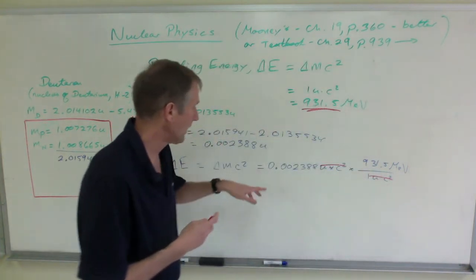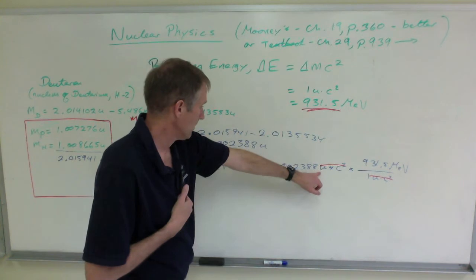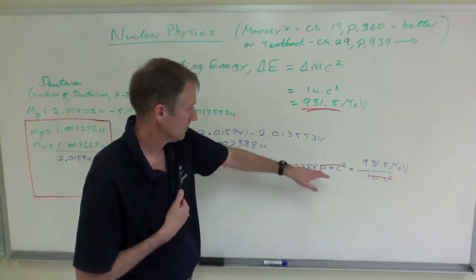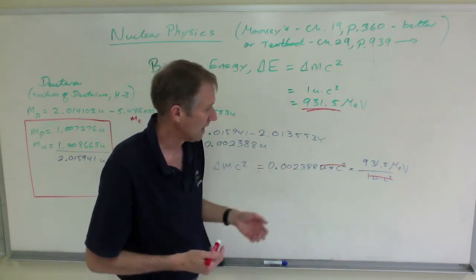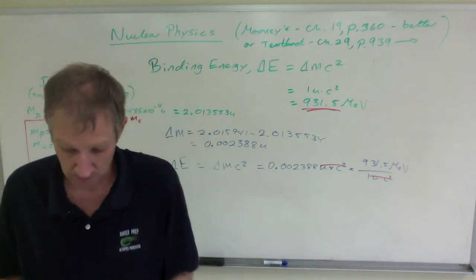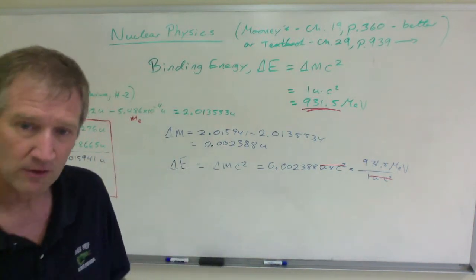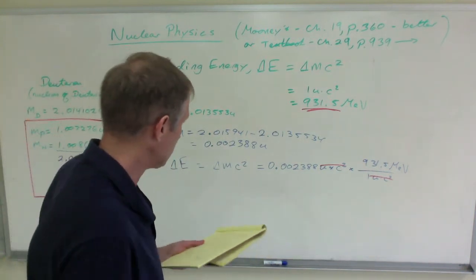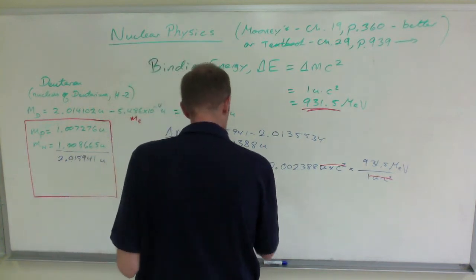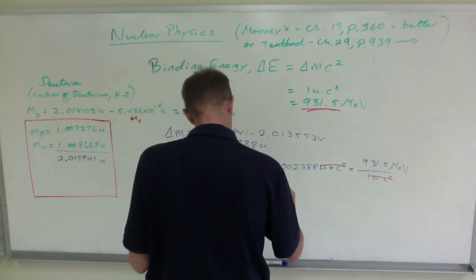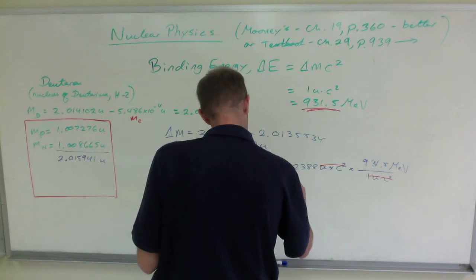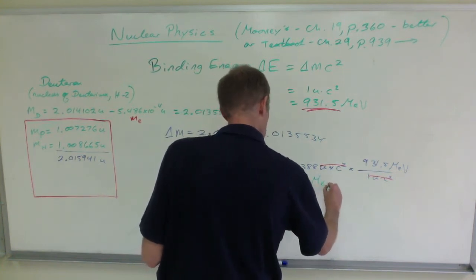So in other words, once you have the thing in atomic mass units, just multiply by 931.5 and you'll have the answer in mega electron volts because we're calculating an energy. Remember, that's an energy unit. This comes out to be 2.224 mega electron volts.